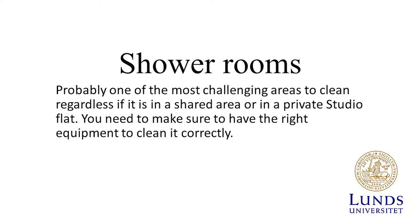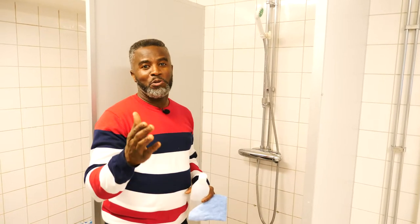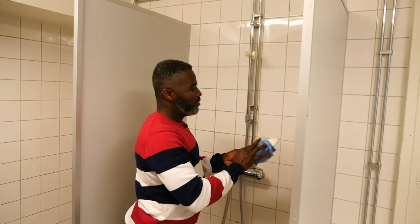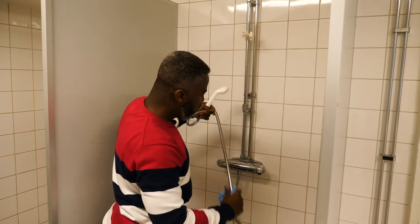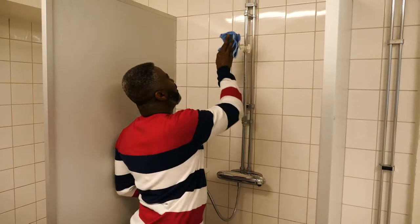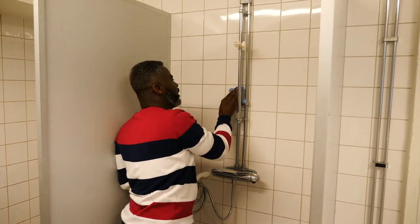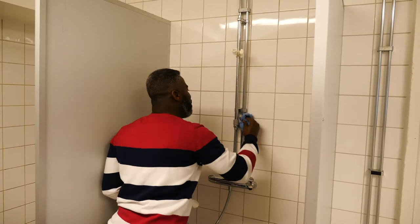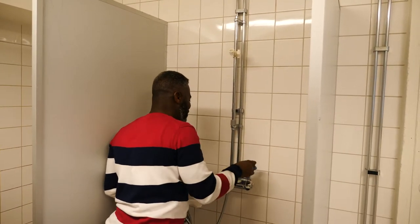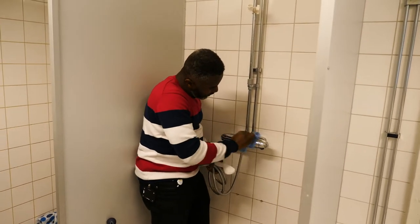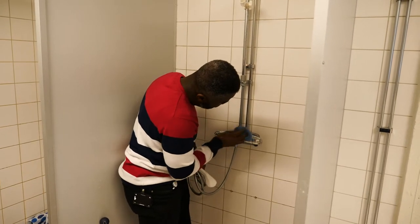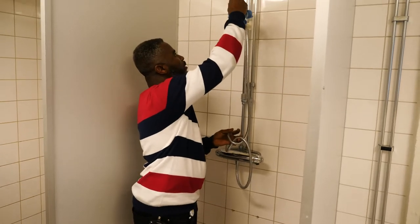Shower rooms are probably one of the most challenging areas to clean, regardless of whether it is in a shared area or a private studio. You need to make sure to have the right equipment to clean it correctly. Now we are in the shower room. Just add a little bit of your chemical on your cloth, then start from the top — very, very important. When you clean the whole thing from the top, make sure you do it often, because when you do it often you won't get rust on the metals, and your washing room and shower will smell very, very nice.